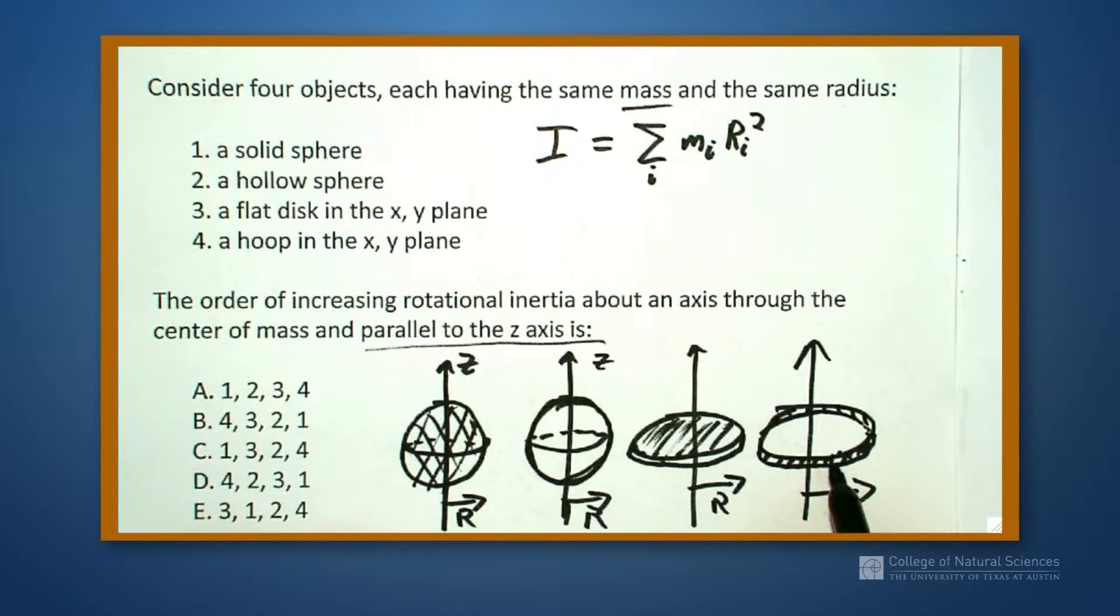Well this mass, all of the mass is sitting at the farthest distance away possible. None of these other objects have the mass as far away from the z-axis as possible. This one has some at the edge but it also has some on the inside. There's some distances all the way through here that have this.